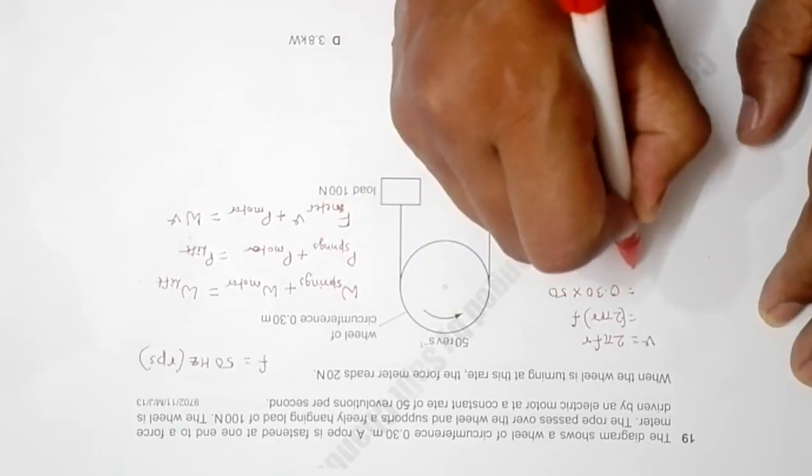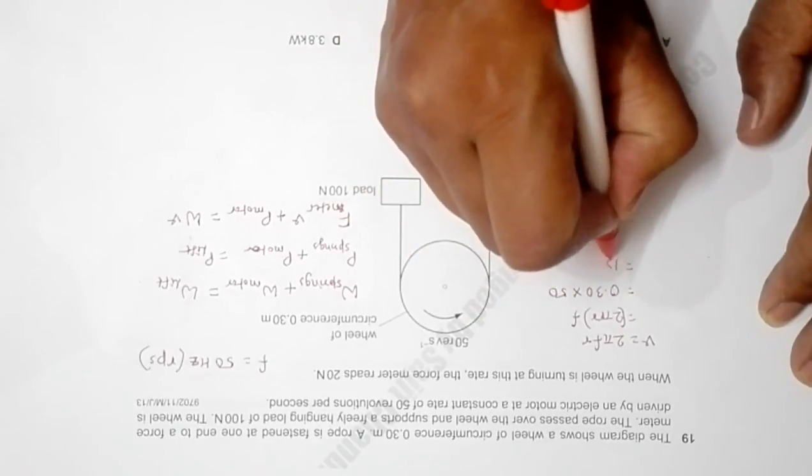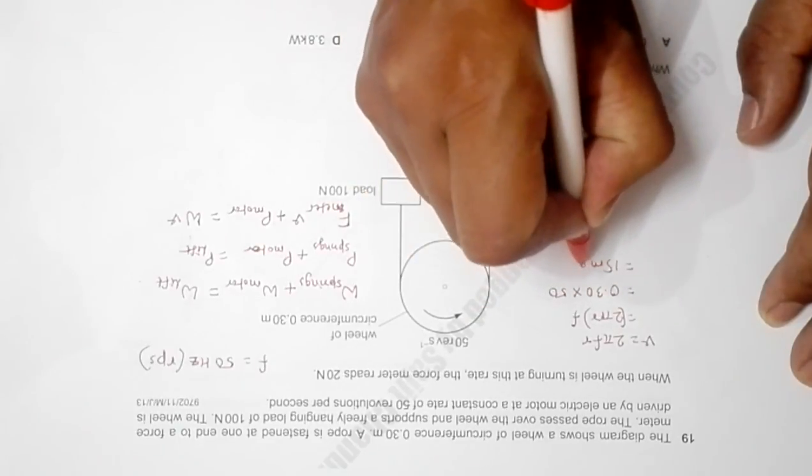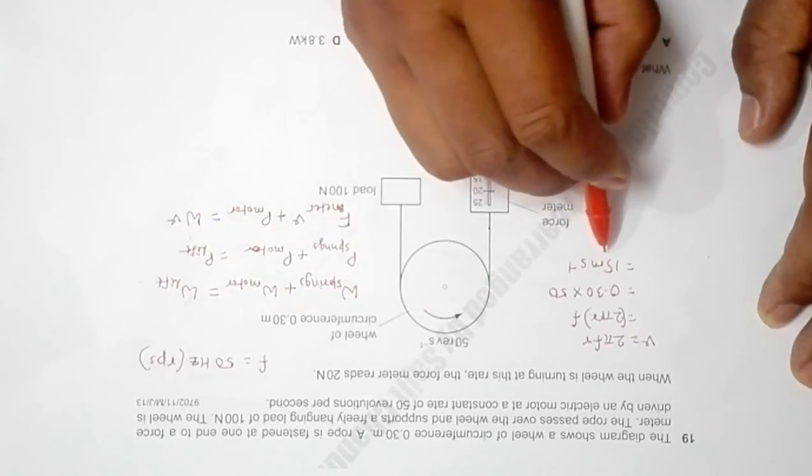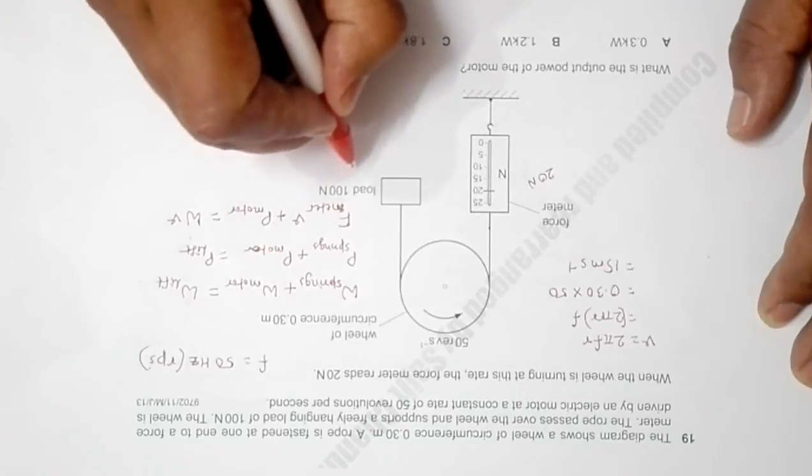The circumference is given as 0.30 meters and the frequency is given as 50 Hertz, so this gives us 15 meters per second. That means it will come up and be coming down at the rate of 15 meters per second.